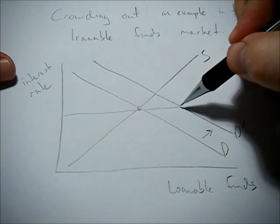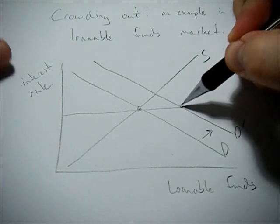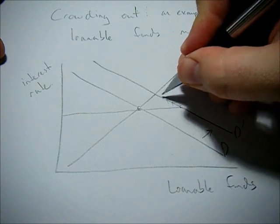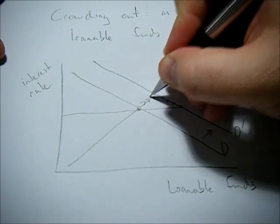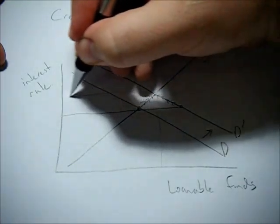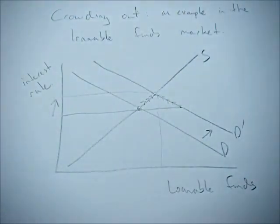There's a shortage of loanable funds. So the market corrects itself by increasing the interest rate until we get to a new equilibrium quantity of loanable funds and a new equilibrium interest rate that's higher.